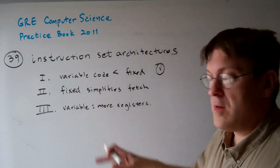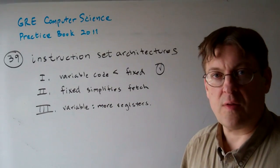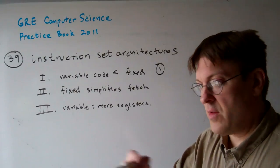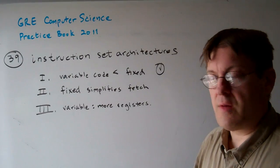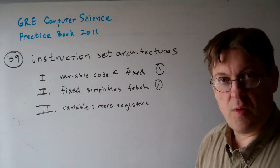Fixed length ISAs, yes, they simplify the fetch operation. That's what makes things go faster in the CPU, right? All those little steps can be done faster. So sure, number two is true also.